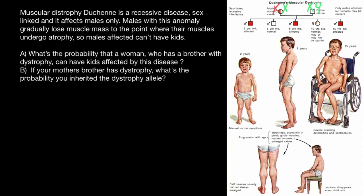Every boy in this family got a Y chromosome from the father's side. So let's put Y chromosome here, here, and here. From the mother's side, they can get either the defective X chromosome or the normal X chromosome — chances are 50%. So this male got the defective X chromosome from the mother's side, the next got the normal X chromosome and his phenotype is normal, and the next two got the defective X chromosome.